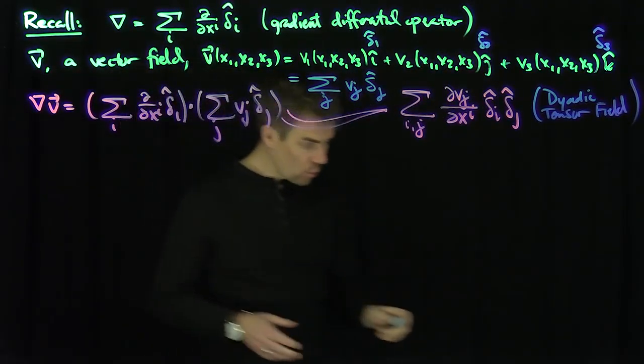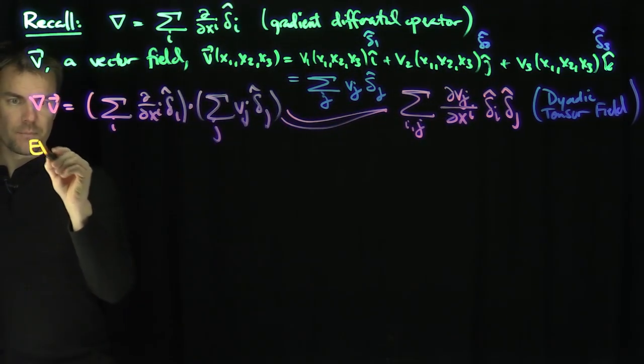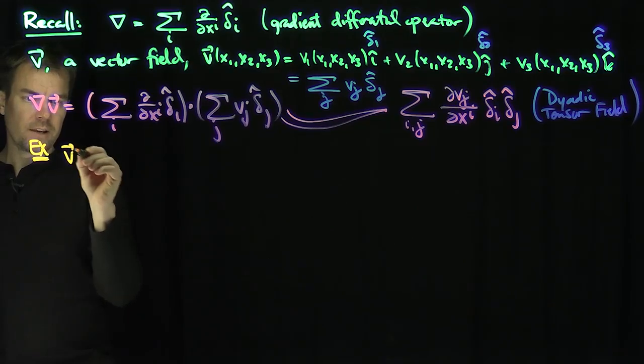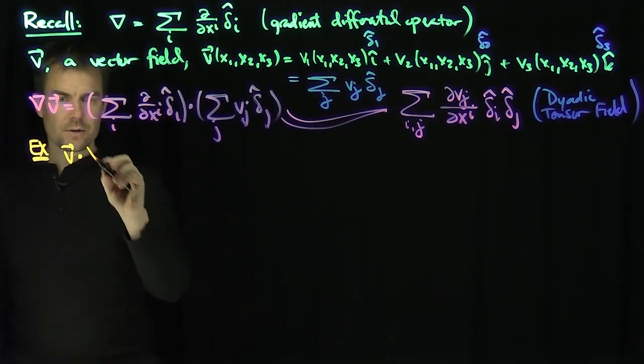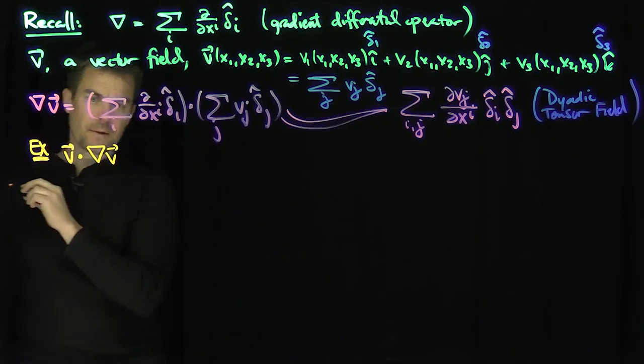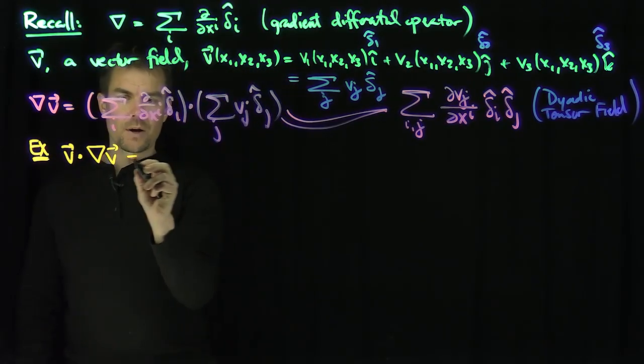Now, one important quantity we see in fluid mechanics is this term in the Navier-Stokes equation. As a consequence, let me do an example. If I do the vector V dot gradient V, this is a term that appears in Navier-Stokes equations. It's a quadratic nonlinearity.